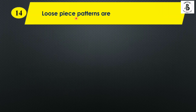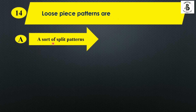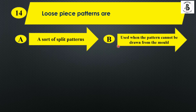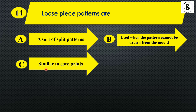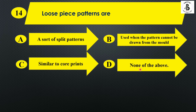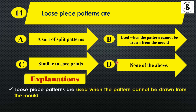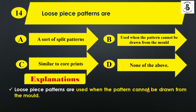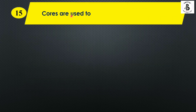The next question: loose piece patterns are — option A: a sort of split patterns; option B: used when the pattern cannot be withdrawn from the mold; option C: similar to core prints; option D: none of the above. Loose piece patterns are generally used when the pattern cannot be drawn from the mold — loose pieces are used to make the exact cavity. So the right answer is option B.